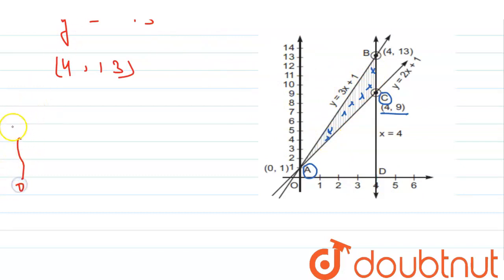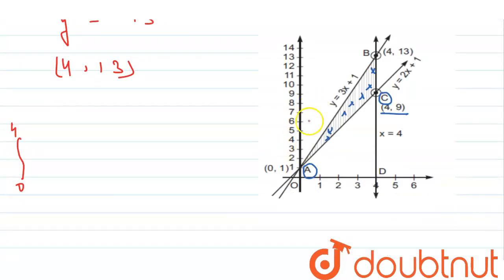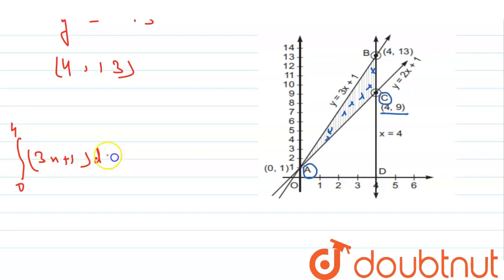To find the area of the shaded region, we integrate from 0 to 4. We take the integral of the upper line (3x + 1) to find the area of the whole region, then subtract the area under the lower line. So the setup is: integration from 0 to 4 of (3x + 1) dx minus integration from 0 to 4 of (2x + 1) dx.